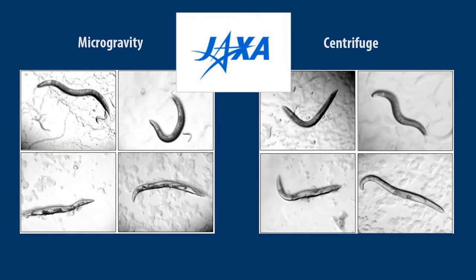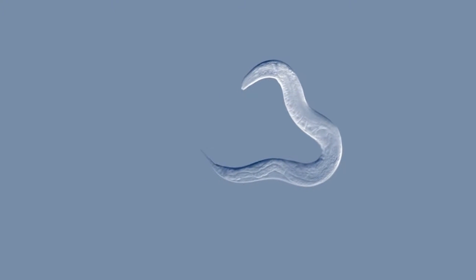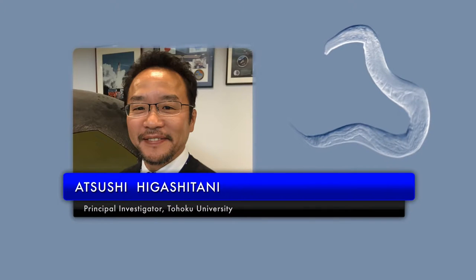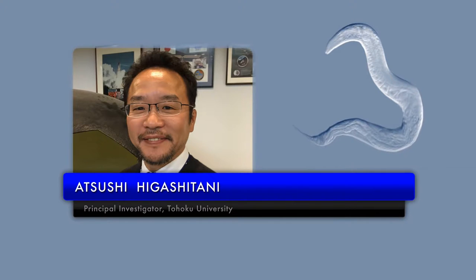The Japan Aerospace Exploration Agency, or JAXA, will be spearheading the investigation. The astronauts will cultivate multiple generations of the organism so we can examine the organisms in different states of development, says Atsushi Higashitani, principal investigator for the experiment with Tohoku University in Miyagi, Japan.